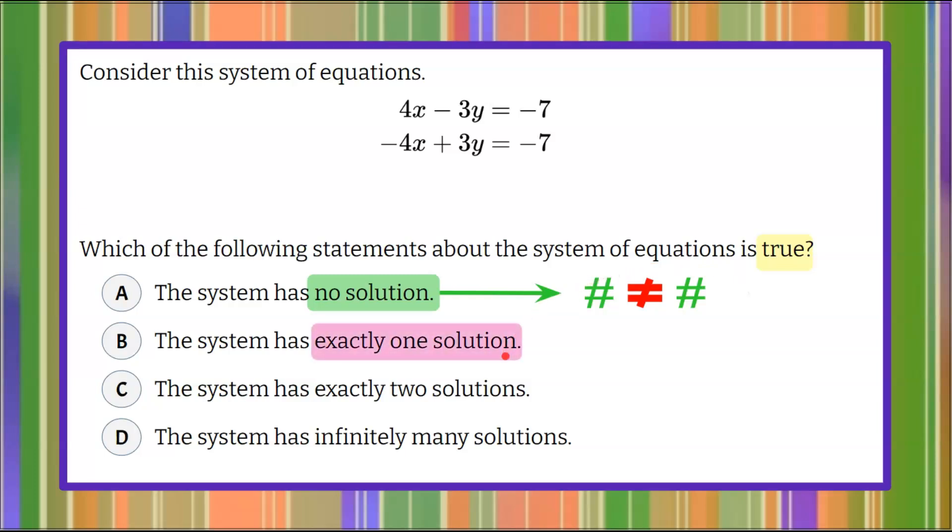If it's one solution, when we solve, we're going to get an x value and one y value that create the ordered pair, where if we graphed these two lines, they would intersect. Going back to no solution, if we graphed it, they would be parallel lines and never intersect.